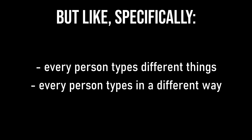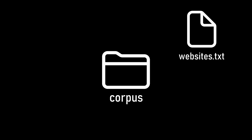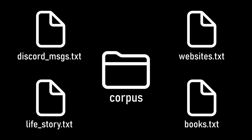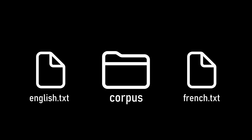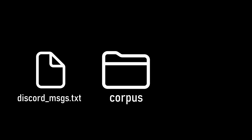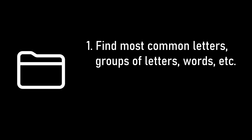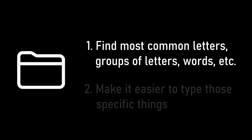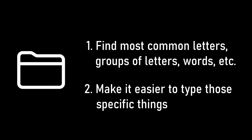Every person also types in a different way. Usually, when we consider what things people type with our layout, we build a large corpus of text that accurately reflects the language we type in. You could design a layout for multiple languages or based solely off of Discord messages, but these are less common. Using the corpus we choose, we can find the most common patterns of characters, and later on we can prioritize those when we design our layout.